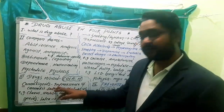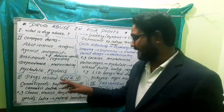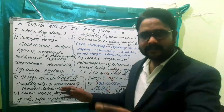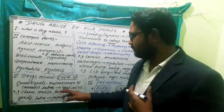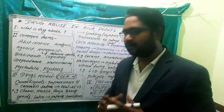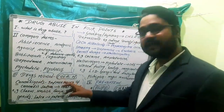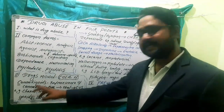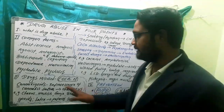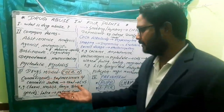Cannabinoids are taken from the inflorescence part of the plant Cannabis sativa. They are taken orally, and their target site in the body is the cardiovascular system. Common cannabinoids include charas, hashish, ganja, and bhang.